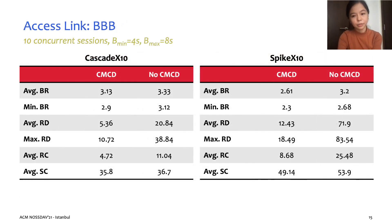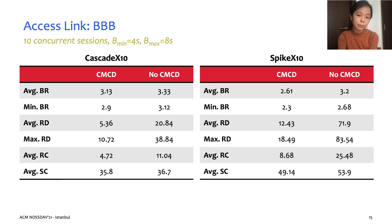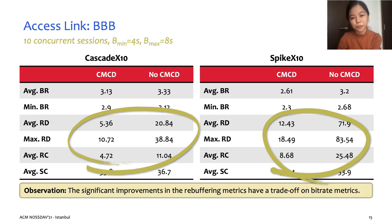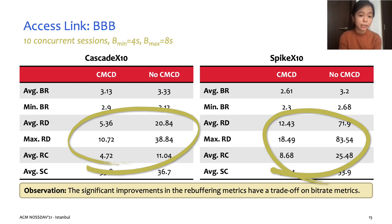In our first test scenario, where we investigated the effect on both types of links with Big Buck Bunny video content, our results show that the use of CMCD with our buffer-based bandwidth allocation scheme does lead to better outcomes for rebuffering performance. Specifically, the circled results show that the average rebuffering duration, max rebuffering duration, and average rebuffering count reduce significantly for both cascade and spike test runs with 10 concurrently streaming clients. However, we also observed a trade-off in bit rate performance, as shown in the dips in average and minimum bit rate values. This is likely due to the server-side throttling affecting the adaptive bit rate decisions made on the client end.